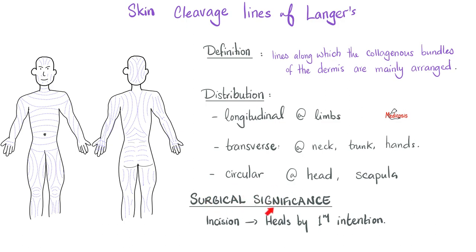Why should you care? If you remember pathology — how did regeneration and healing take place? We had primary intention versus secondary intention. Which one was the clean surgical incision that heals beautifully without leaving a big scar? The answer is primary intention. How do surgeons do it? First of all, they make sure that the incision is clean.